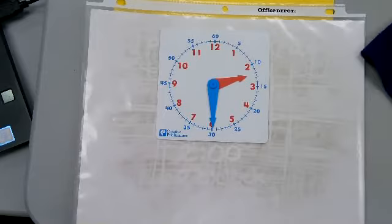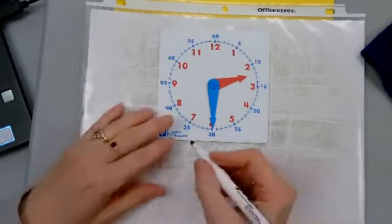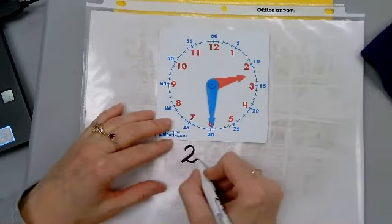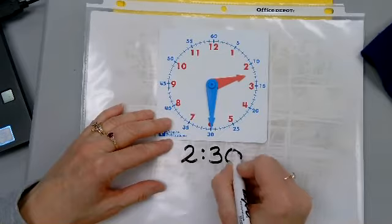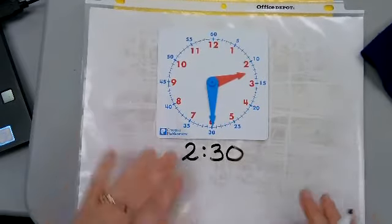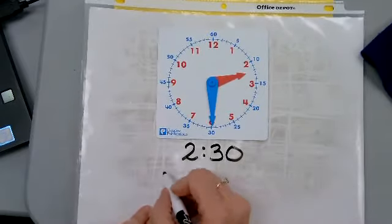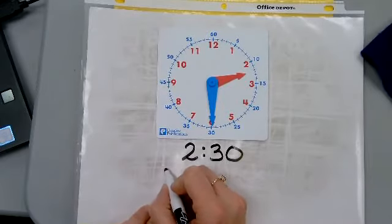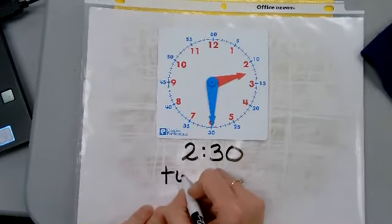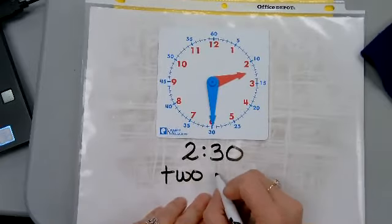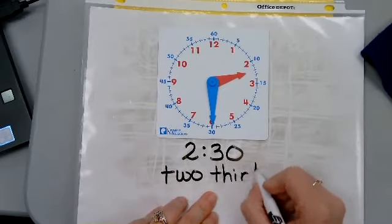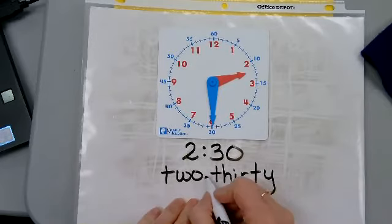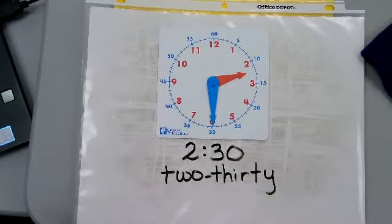Class, what time does the clock show? The clock shows 2:30. We could also write this in words. We could write the number two as a word. Two is spelled T-W-O for the number. Two, 30. T-H-I-R-T-Y. So we could say it's 2:30, and I put a dash in the middle.